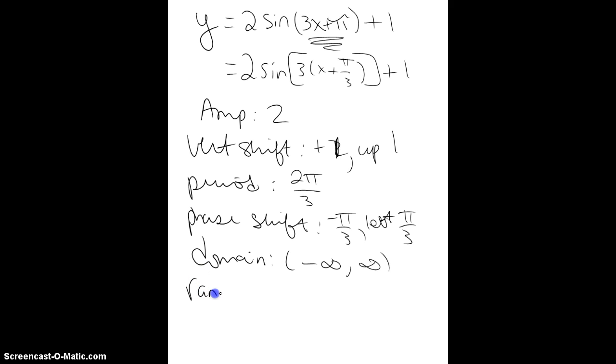And for the range, I can actually figure this out as well. So the normal range would be negative 1 to 1. The amplitude would make that change to a negative 2 to 2. But then again, remember, we're shifting it up on the y. So if I add 1 to both of those, I end up getting a negative 1 to a positive 3.